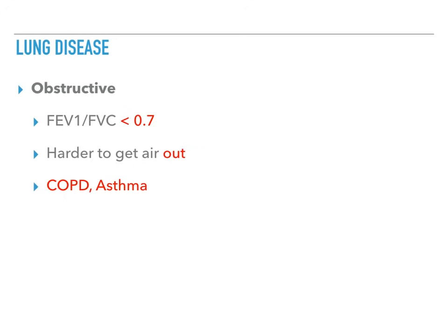So this ratio is less than 0.7. In obstructive lung disease, it's harder to get air out. And examples of obstructive lung disease are COPD and asthma. So chronic bronchitis, emphysema, asthma, these are all examples of an obstructive lung disease.